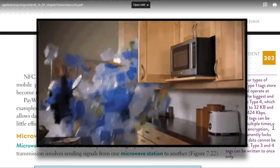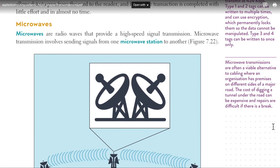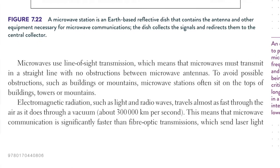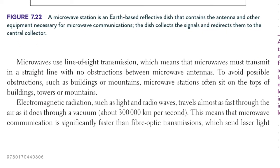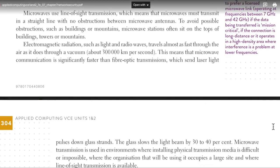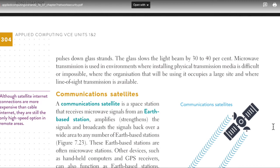Microwaves are radio waves that provide a high-speed signal transmission. Microwave transmission involves sending signals from one microwave station to another. Microwaves use line-of-sight transmission, which means that microwaves must transmit in a straight line with no obstructions between microwave antennas. To avoid possible obstructions such as buildings or mountains, microwave stations often sit on top of buildings, towers, or mountains. Electromagnetic radiation such as light and radio waves travel almost as fast through the air as through a vacuum, meaning microwave communication is significantly faster than even fibre optic transmissions, which send laser light pulses down glass strands — the glass slows the light beam by 30 to 40 percent. Microwave transmission is used where installing physical transmission media is difficult or impossible, where the organisation occupies a large site, and where line-of-sight transmission is available.